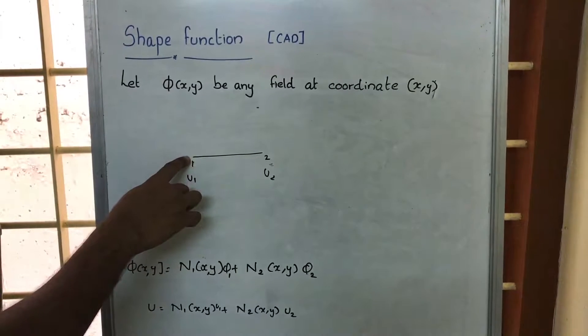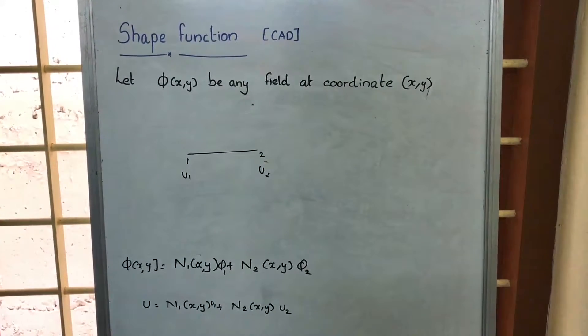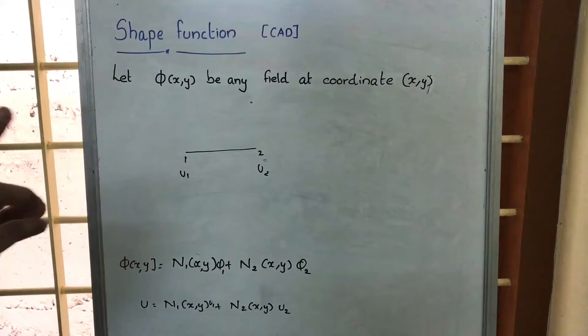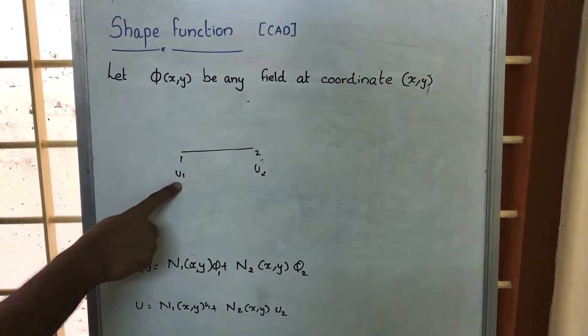So we will have two nodes. One node is here and this is the second node. And we are having two displacements. First one is u1.